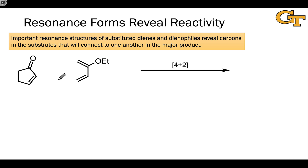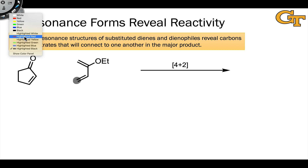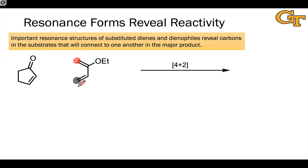Now, with a diene and a dienophile both bearing substituents, the diene and dienophile are asymmetric with respect to flipping one over, meaning we could end up with two possible products. The two carbons on the ends of the diene and dienophile — the carbons that connect through sigma bonds in the reaction — are now different. For example, the carbon highlighted in black in the diene is not the same as the other end carbon highlighted in red, because the ethoxy group is closer to one and farther from the other.